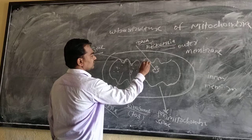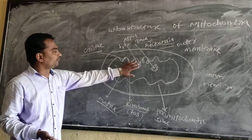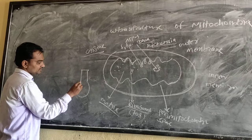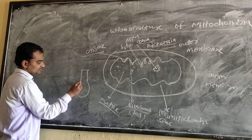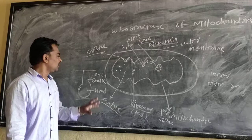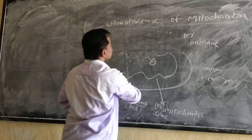On the cristae, a structure is present called ATPase, also known as the F1F0 particle. The F1F0 particle is present on the inner membrane of mitochondria. Structurally, the F1F0 particle consists of a base attached to the inner membrane, a stalk, and a head. The function of the F1F0 particle is to help in the production of ATP.